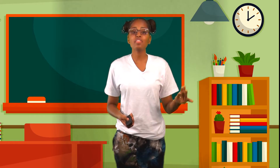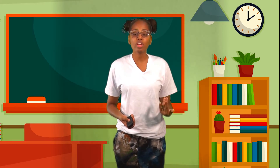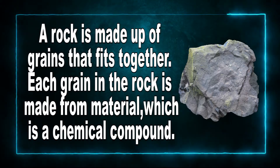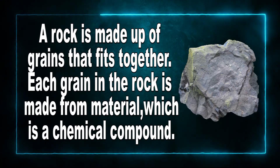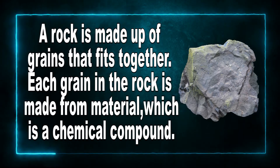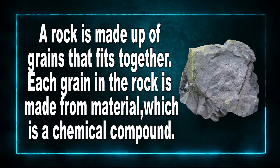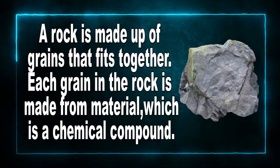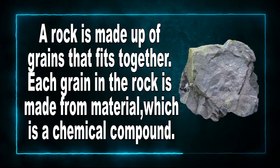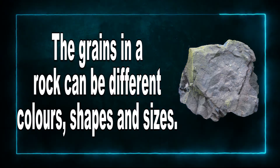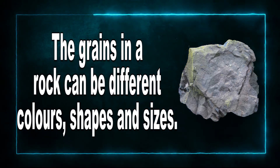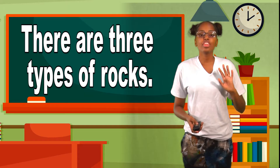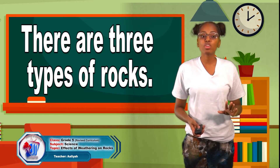Before we discuss the effects of weathering, let's discuss: what is a rock? A rock is made up of grains that fit together. Each grain in the rock is made up of minerals, which form a chemical compound. Also, the grains in a rock can be different colors, shapes, and sizes.